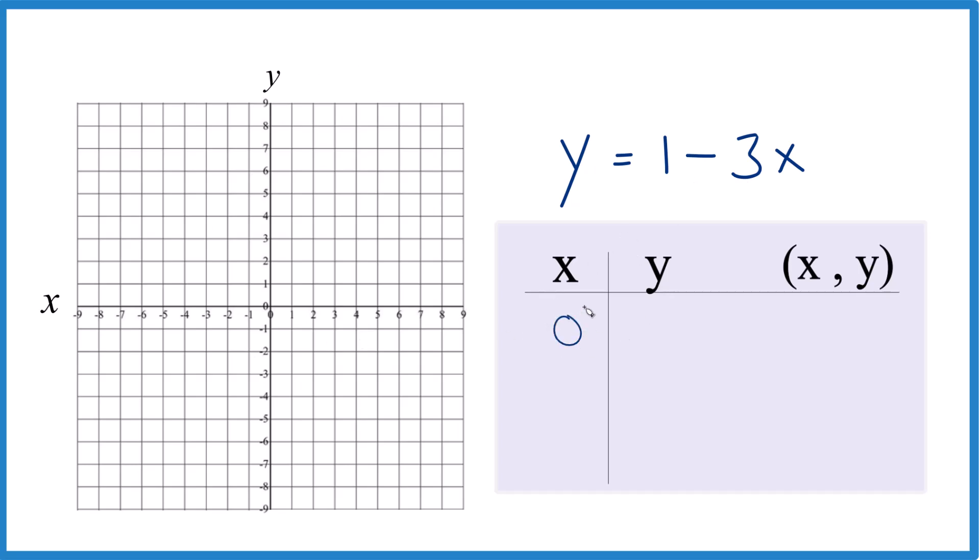I like to start out with 0 for x because 3 times 0, that's just 0. So 1 minus 0, that's 1. So we have the point 0 comma 1, and we can graph that.